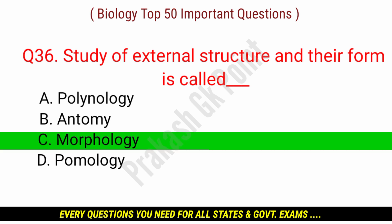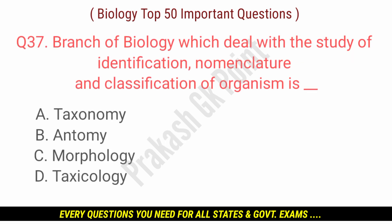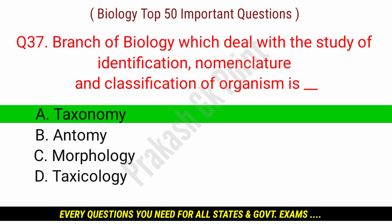Study of external structure and their form is called? Answer: option C — Morphology. Branch of biology which deals with the study of identification, nomenclature and classification of organisms is? Answer: option A — Taxonomy.